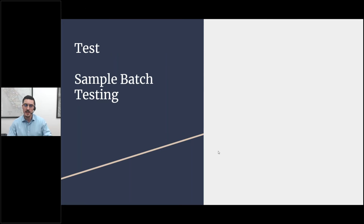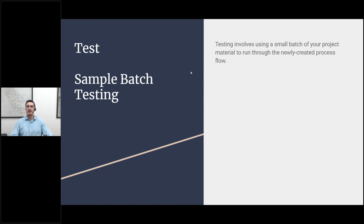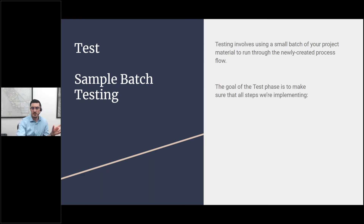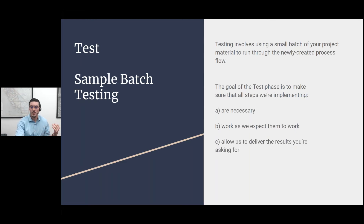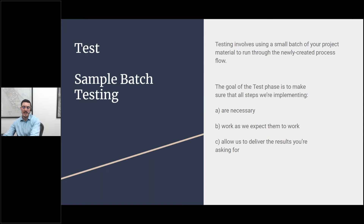Once the process flow is created, the next phase is the test phase — sample batch testing. What we're doing during the test is taking a small portion of your overall project and running it through that newly created process flow to see what happens. The goal is to make sure all the steps we're implementing are necessary, work as expected, and allow us to deliver the results you're asking for. We're actually using the real process flow — just with a small portion of material.